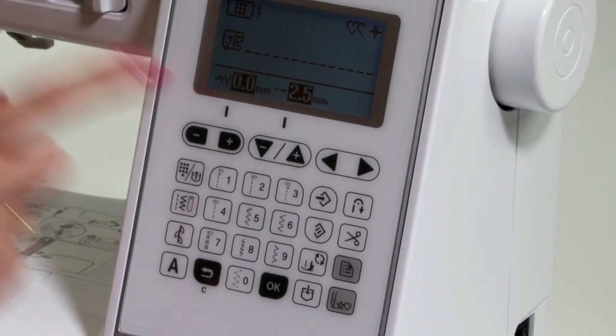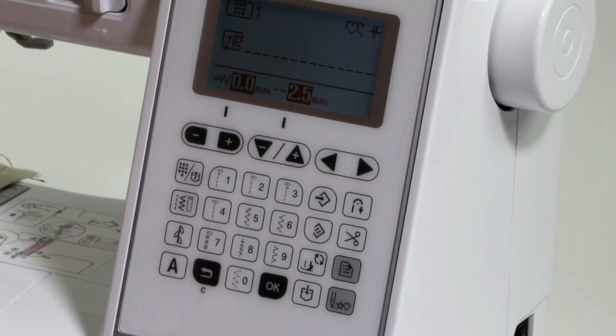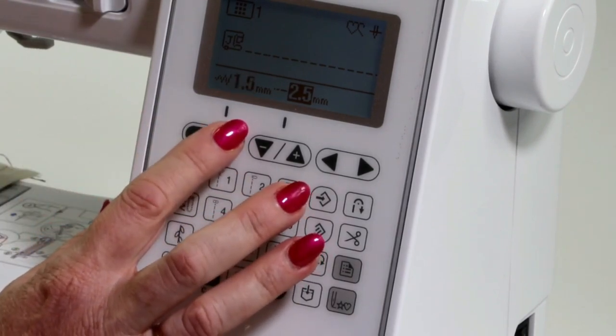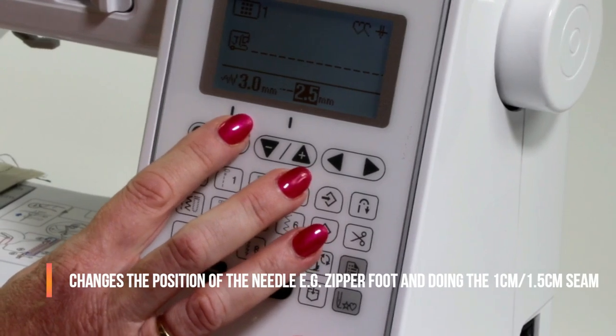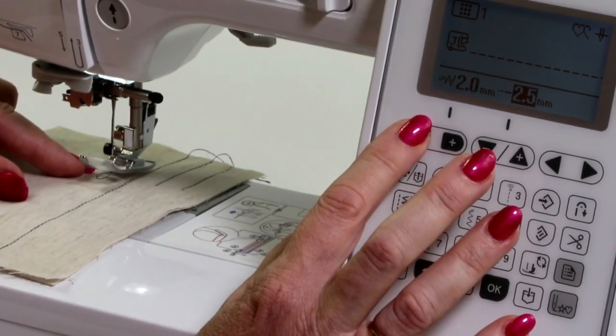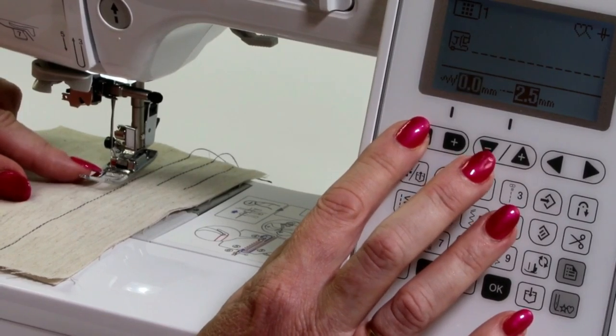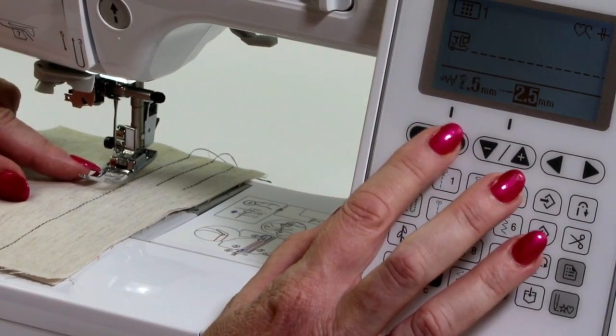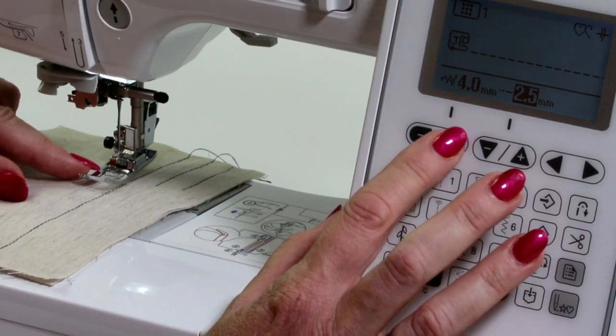Now, with the width on the straight stitch, well, you don't need a width as such, but what it does, it moves our position of our needle. So as we're looking at the needle itself, you can see how it's moving right from the left hand position over to the right hand position.